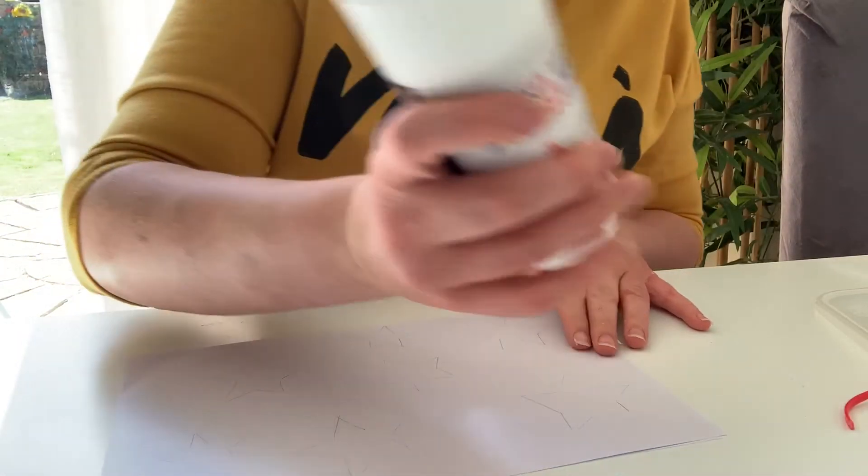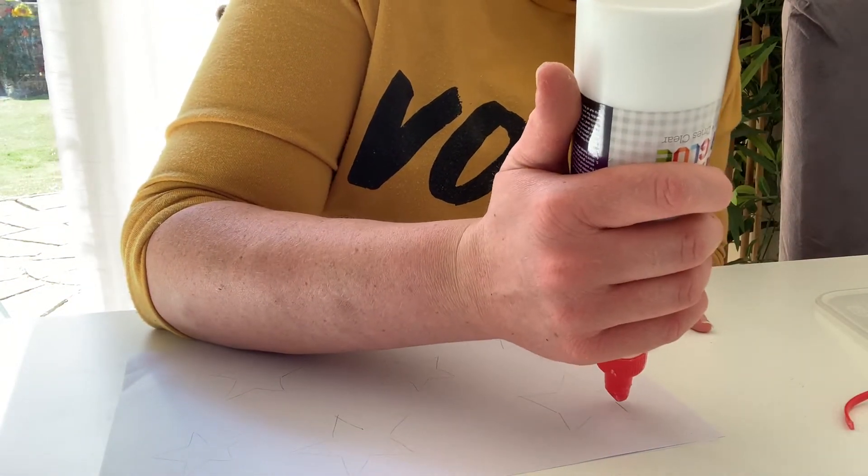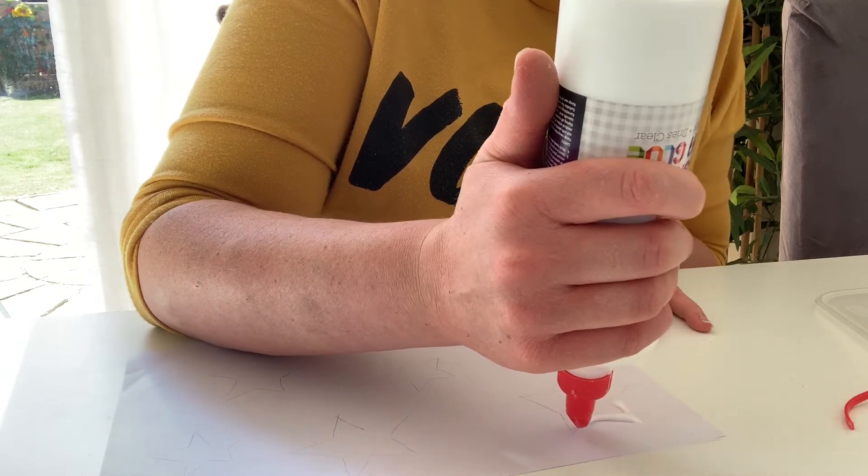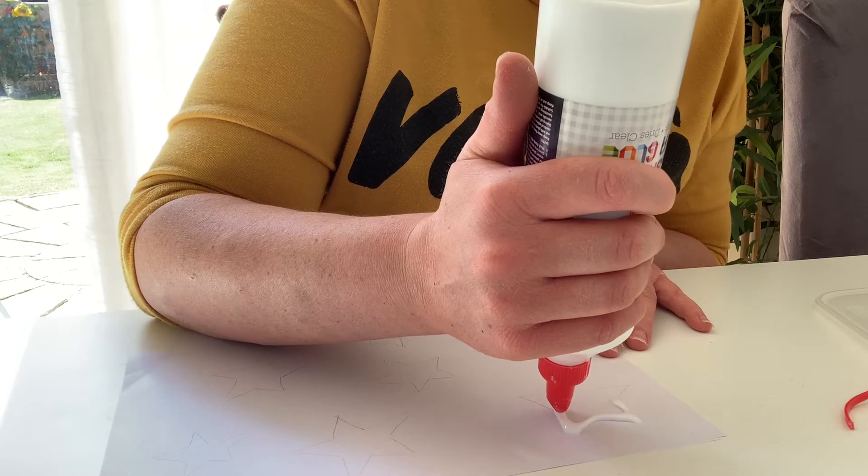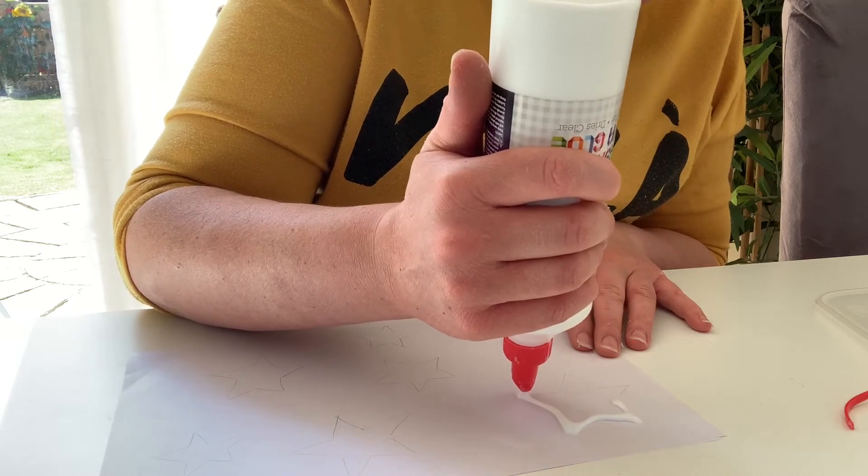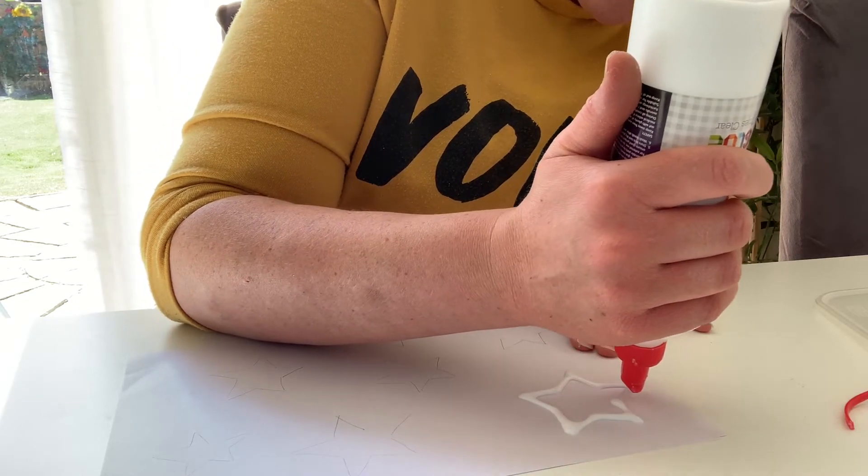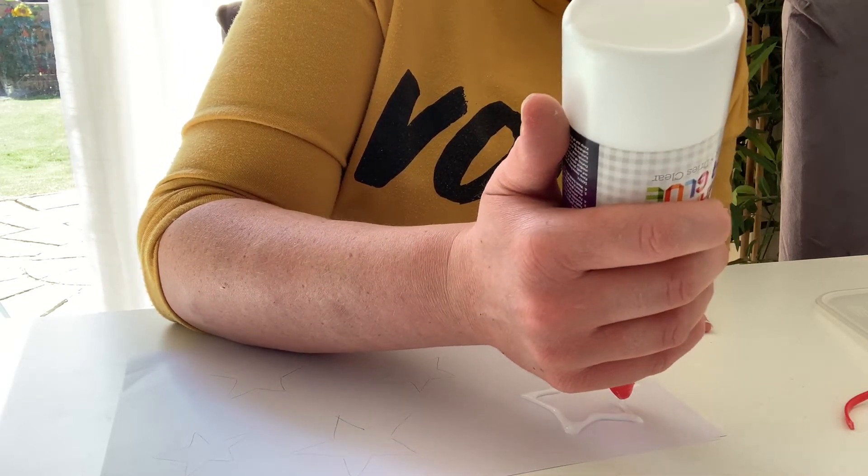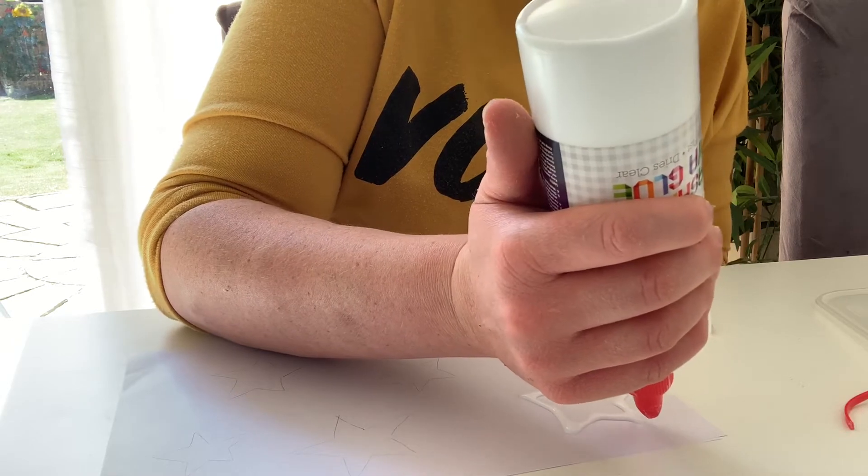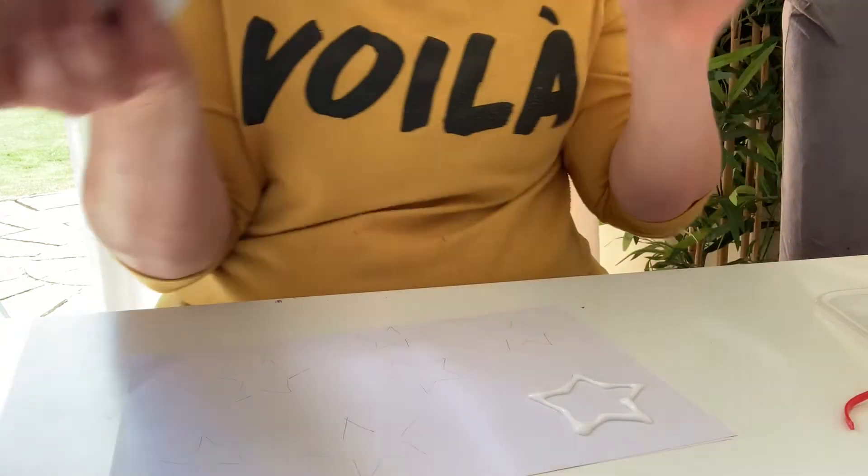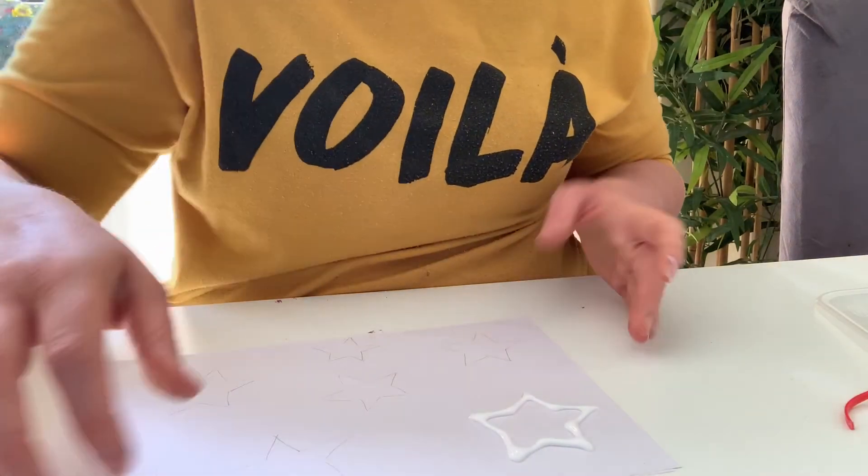Okay, so now you've done your design, you're going to squeeze your glue over all of the lines you've just drawn. So I'm going to go over the first star here. I'm squeezing directly onto the paper rather than using a glue spreader because it needs that thick line for the salt to stick to. So that's the first one done. I'll show you that like so.